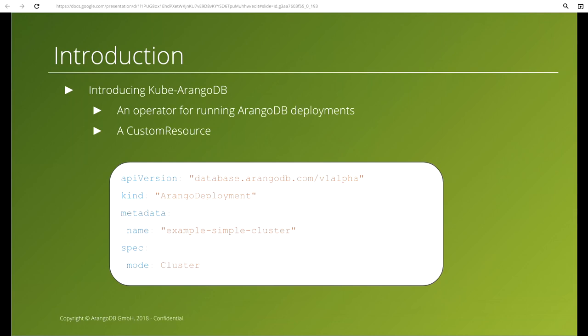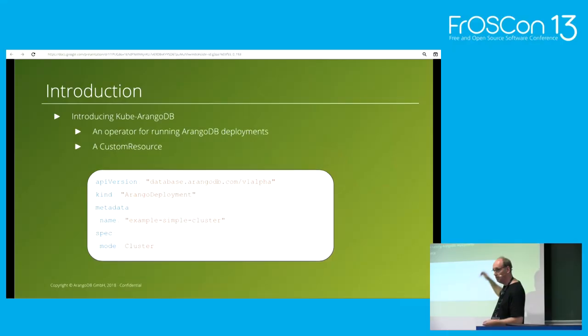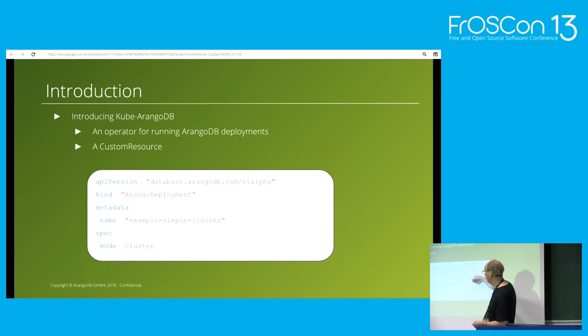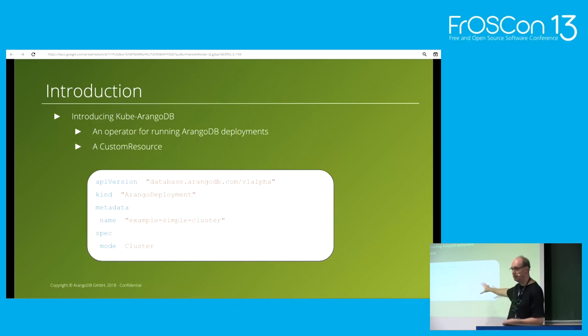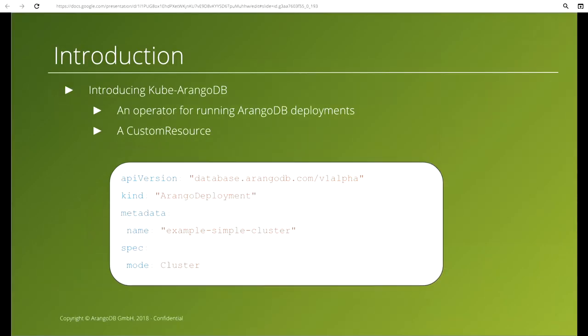How does this look? Keep in mind those 450 lines of YAML we had before. This is one, two, three, four, five, six lines — and here I describe an entire cluster. So we go down from 450 lines to just six, which is kind of nice. Obviously we can make it bigger because I haven't told it which version to use or many other things, but if you just want a cluster, this is it.